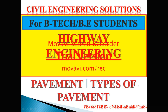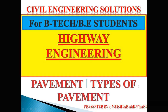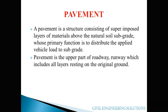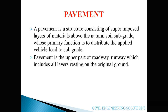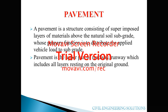Welcome back to the channel Civil Engineering Solutions. Today we are going to discuss the most important topic from highway engineering — pavement, types of pavement, and the difference between different types. A pavement is a structure consisting of superimposed layers of materials above the natural soil or subgrade, whose primary function is to distribute the applied wheel load or vehicle load to the subgrade.